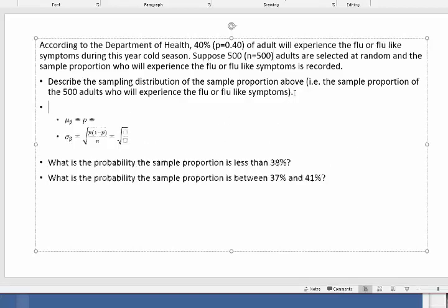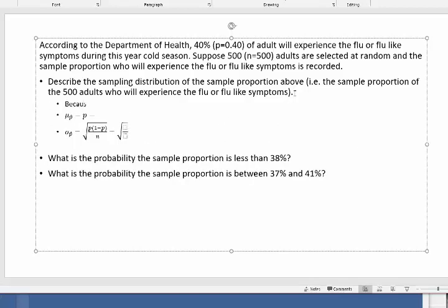So the sample proportion of the 500 adults who will experience the flu or flu-like symptoms. Well, here's what we know. Because the sample size is large, the sampling distribution will be normally distributed. When something's normally distributed, we always report the mean. So the average proportion we should get should be equal to the population proportion P, which equals 0.40.